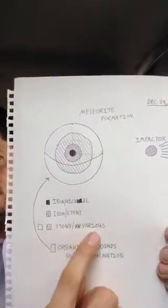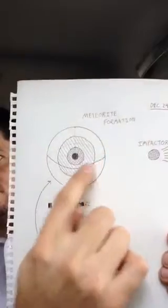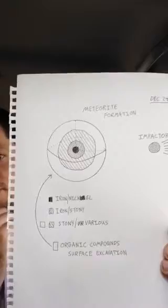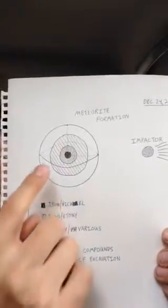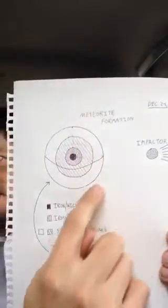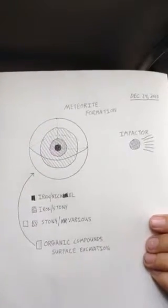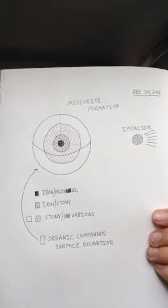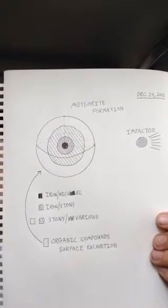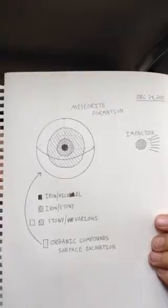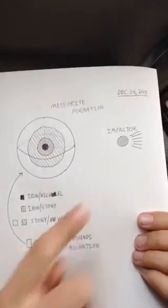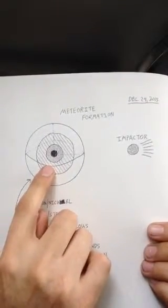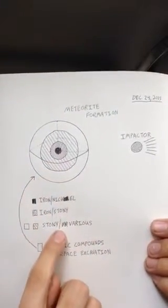Then you have your stony and various other types of material in the mantle and in the outer mantle. Depending on if the meteorite hits and excavates the surface of an object that has life on it, such as the Earth, will determine if that meteorite will have some remnants of organic molecules on it, still left over from the initial impact area. It all depends on how much damage this does to this object — that will determine what kind of meteorite is formed.